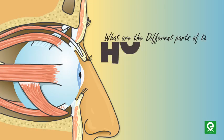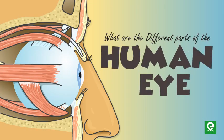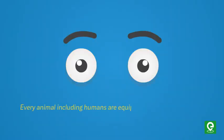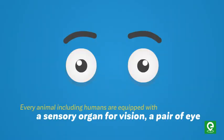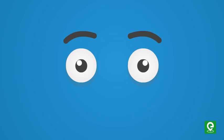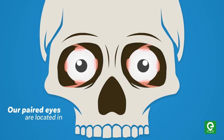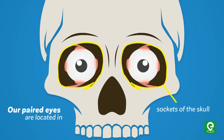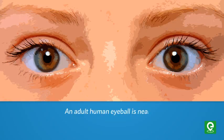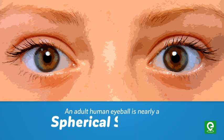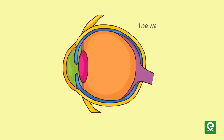What are the different parts of the human eye? Every animal, including humans, is equipped with a sensory organ for vision — a pair of eyes. In this video, we will discuss the different parts of an eye. Our paired eyes are located in sockets of the skull called orbits. An adult human eyeball is nearly a spherical structure.